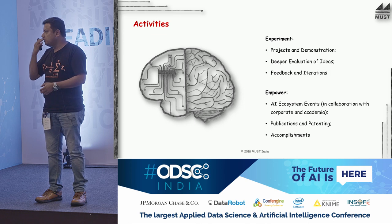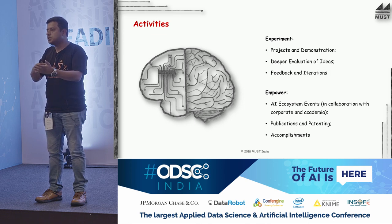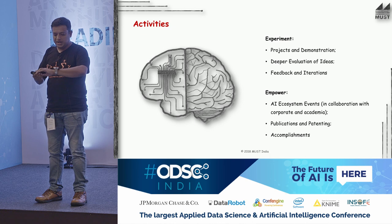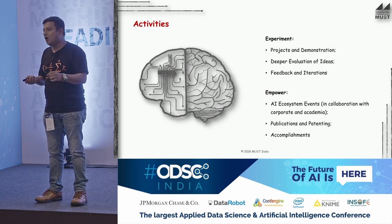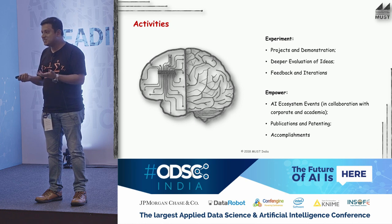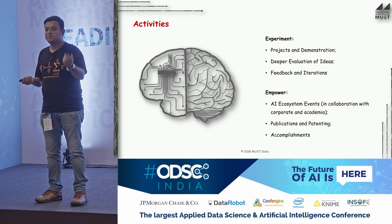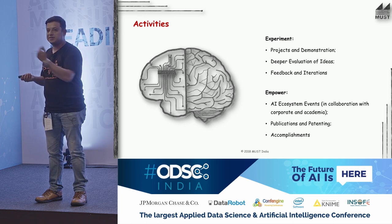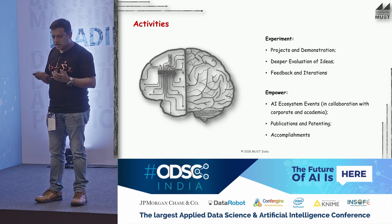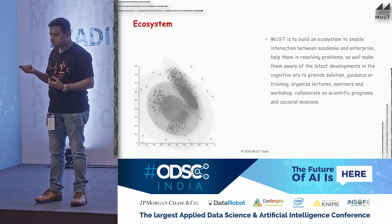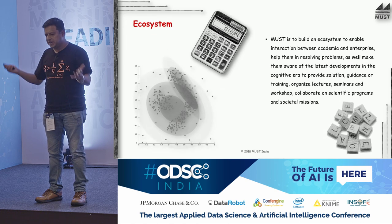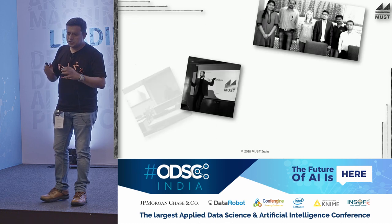Evaluation of ideas is also important — some ideas aren't feasible. For example, I thought about digitizing doctors' handwritten prescriptions, but it's hard to get that kind of data because it's personal information. Feedback, iteration, and improvement are key. We demonstrate at different academic institutions. And finally, we are building the ecosystem with data scientists and data science enthusiasts.